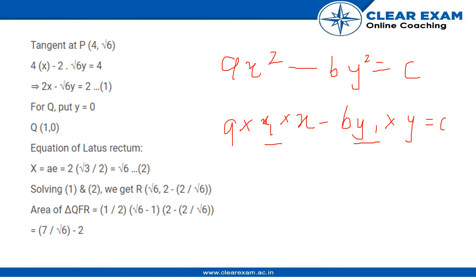So we put x₁, y₁ into that which gives us the equation as 4x - 2√6y = 4. Once we simplify it we get 2x - √6y = 2 as equation 1.